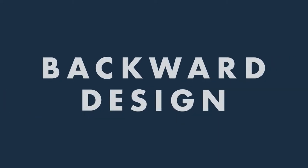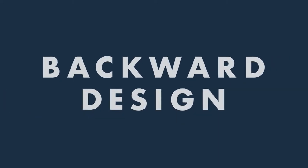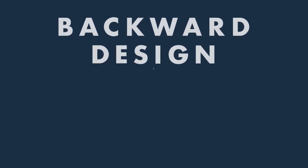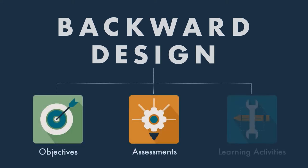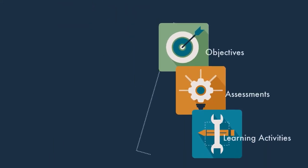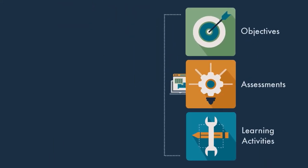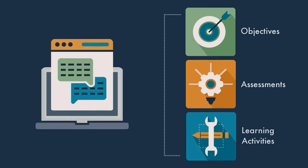Backward design is a useful framework to build a college course. This framework contains three parts: objectives, assessments, and learning activities. These three elements work together to help create a course that can have a legacy long after the end of the semester.